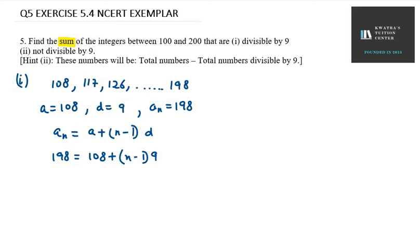So I will take 108 to the left-hand side, so it will be 198 minus 108, that means 90 equals n minus 1 into 9.